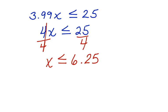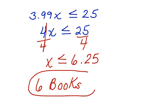So, Jessie can buy 6 books with her $25. If she buys more than 6 books, she'll go over the $25. 6 books is the number of books that Jessie can buy with her birthday money.